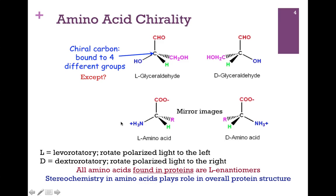In the L-amino acid, the amine group is on the left — notice that's analogous to L-glyceraldehyde. In the D-amino acid, the amine group is on the right. Stereochemistry in amino acids does play a role in overall protein structure, so we want to get this principle clear in our minds. We find that all amino acids found in proteins are the L-enantiomer. It would be more accurate to refer to the amino acid as L-alanine, but because most are the L-enantiomers, we tend to drop that designation and simply refer to the name.